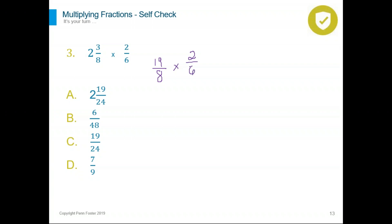Now ask ourselves: can we eliminate any common factors between a numerator and a denominator? We can eliminate the two — divide eight over two to get four, and two over two to get one. Rewrite the problem: 19 over four times one over six. We cannot cancel the two from the six and the four since cancellation must be between a number on top and a number on the bottom — not two denominators or two numerators. Multiply across: 19 times one is 19 and four times six is 24. The right answer is C.